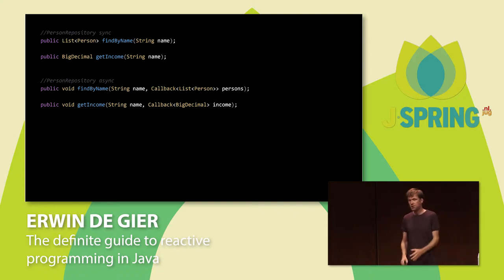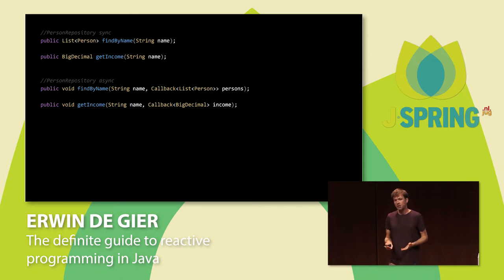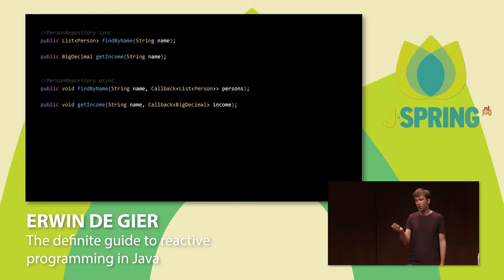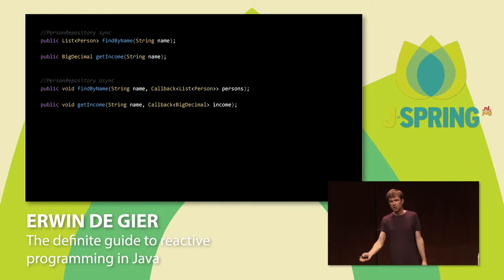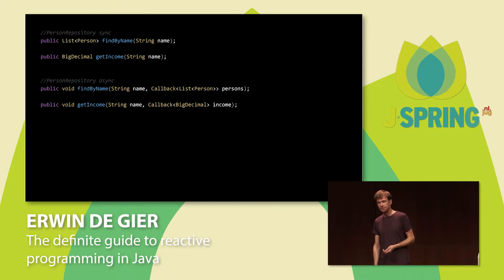If you look at the traditional approach, we do a query — we find persons by their name and get back a list of persons. If we want to get income, we give the name and get back the value. We can rewrite this in an asynchronous way: instead of a return type, the method becomes a void method with a second parameter which is a callback. This is a style you'll recognize if you've done other languages or Swing programming in Java. We could already do this with anonymous methods in old Java, and it's a little easier today with lambdas.